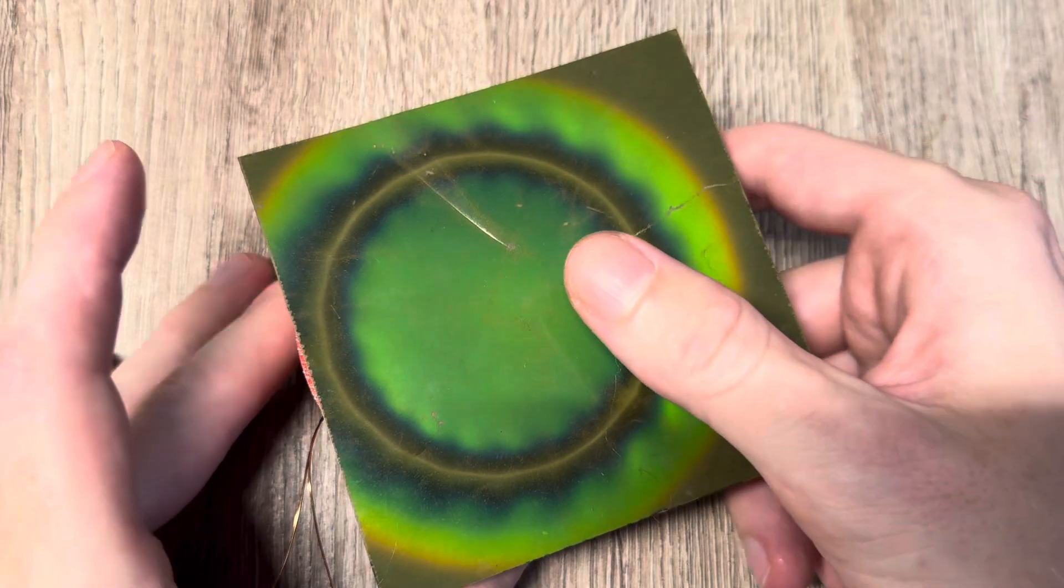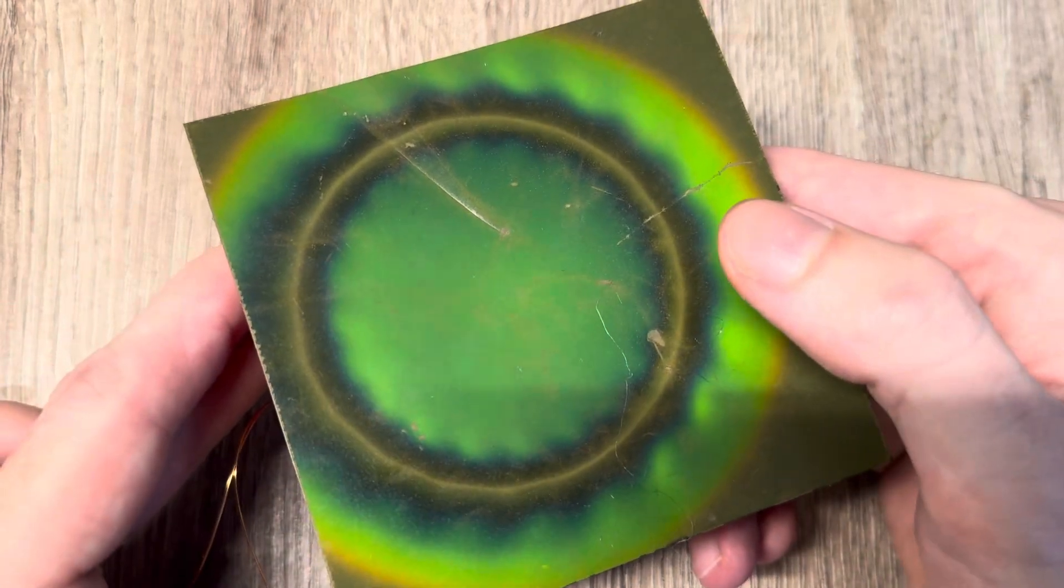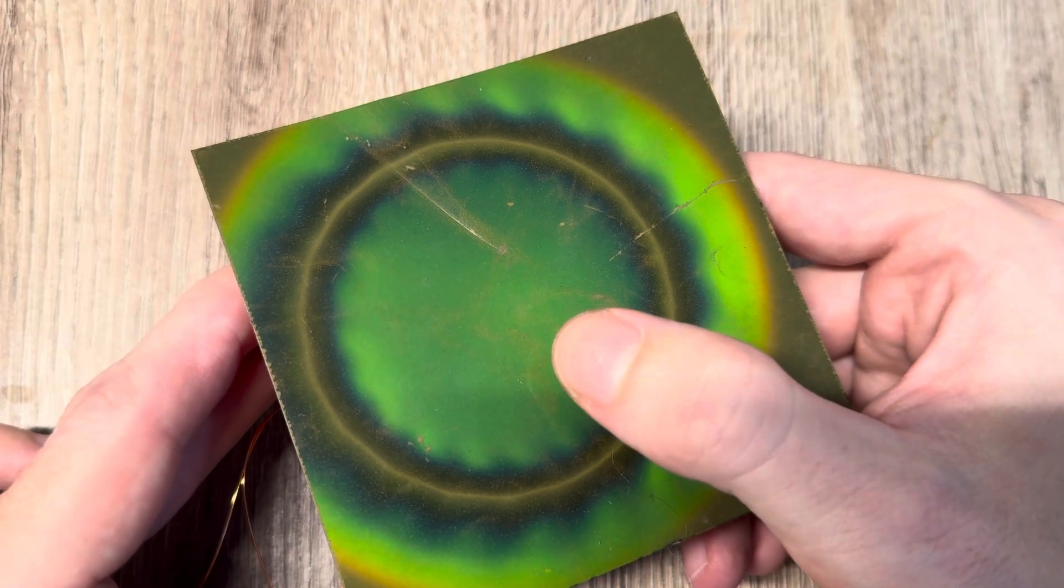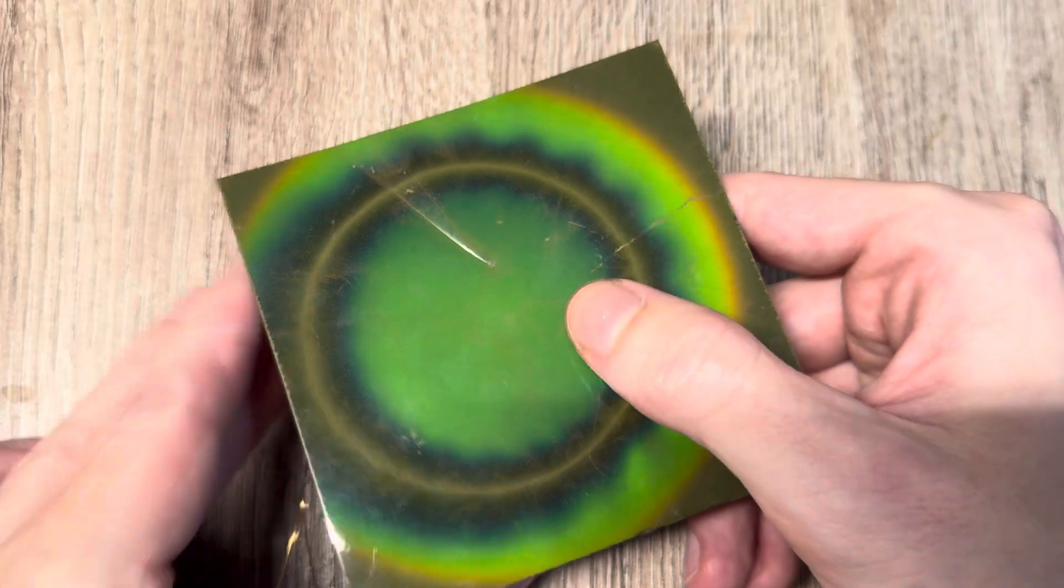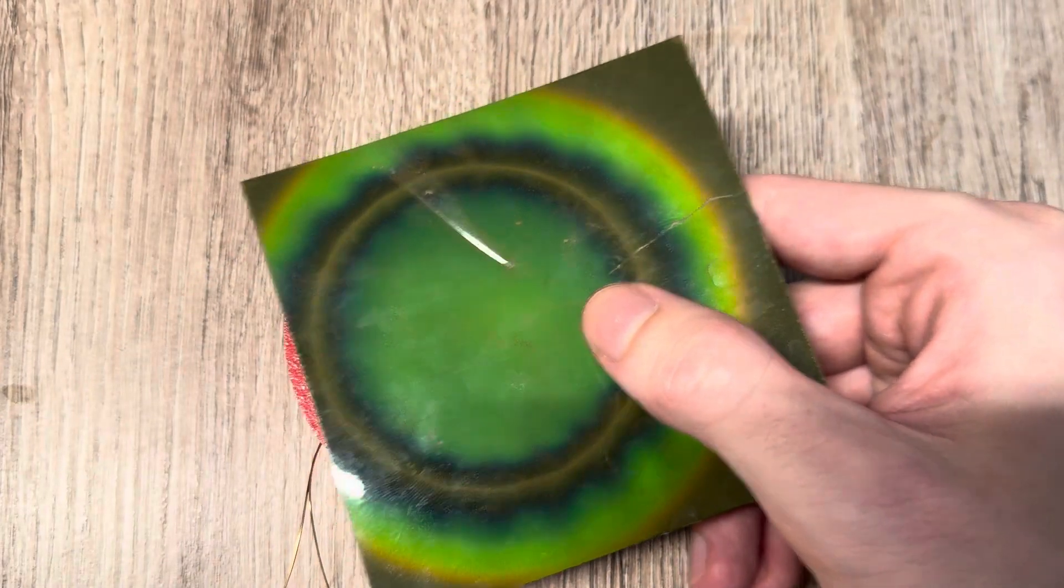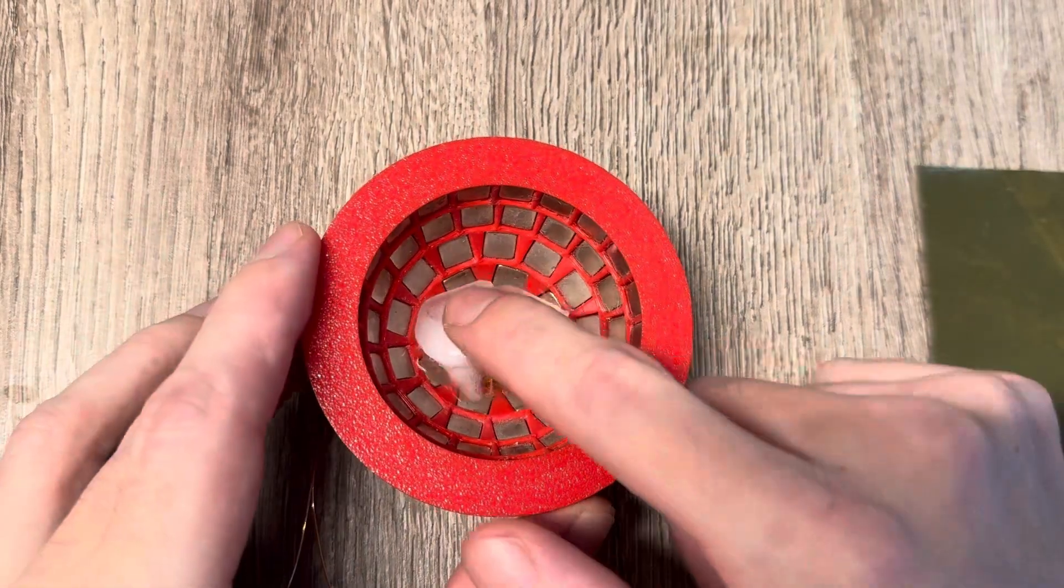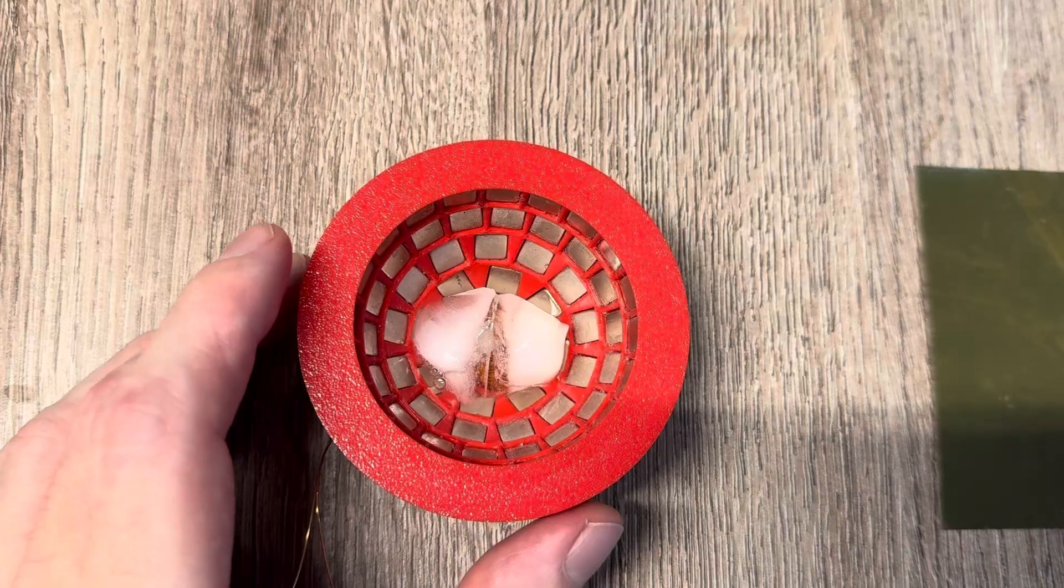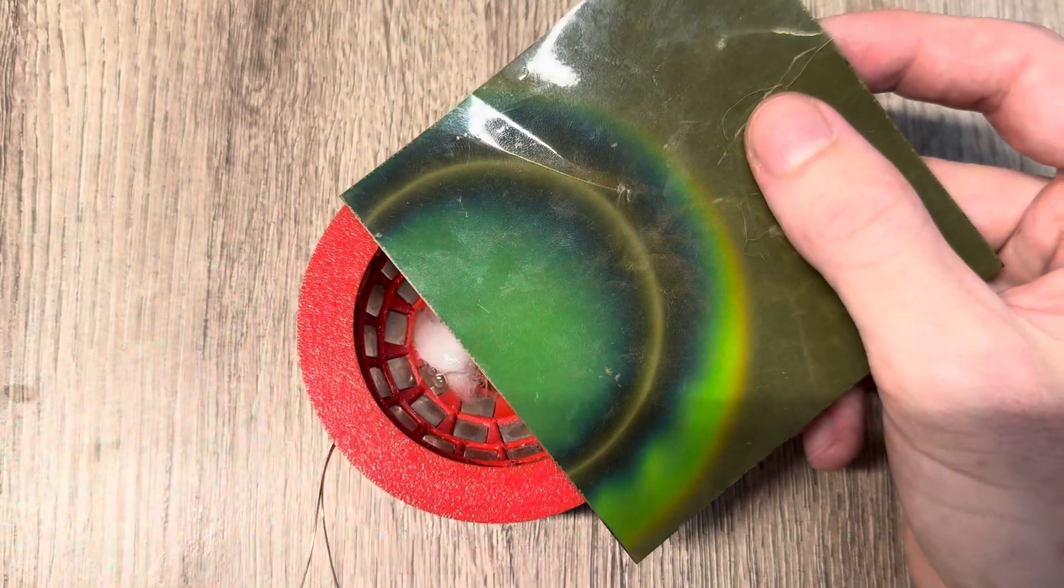If I put the field viewer just on top of here you can see even from up here the color slightly shifting.